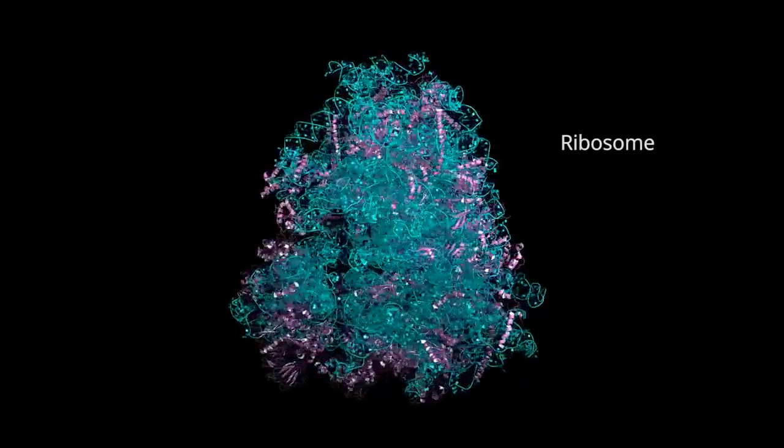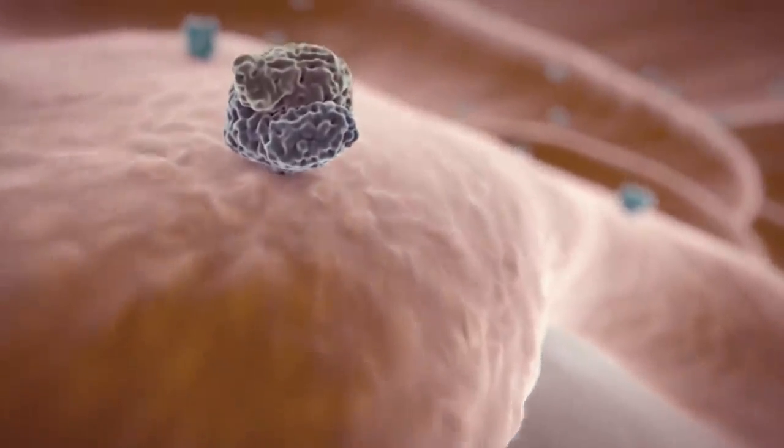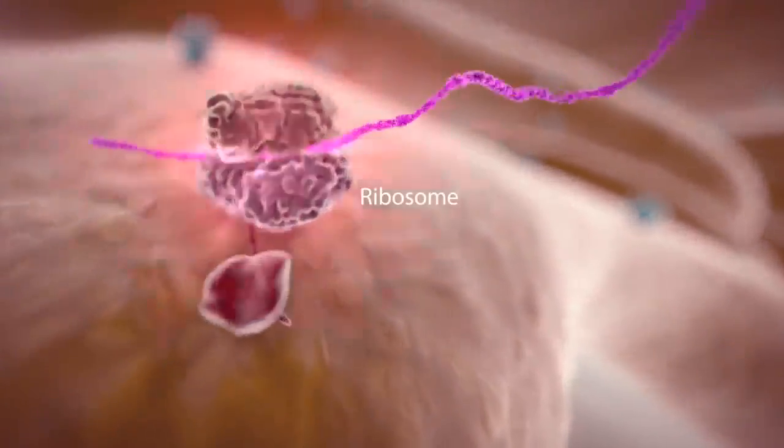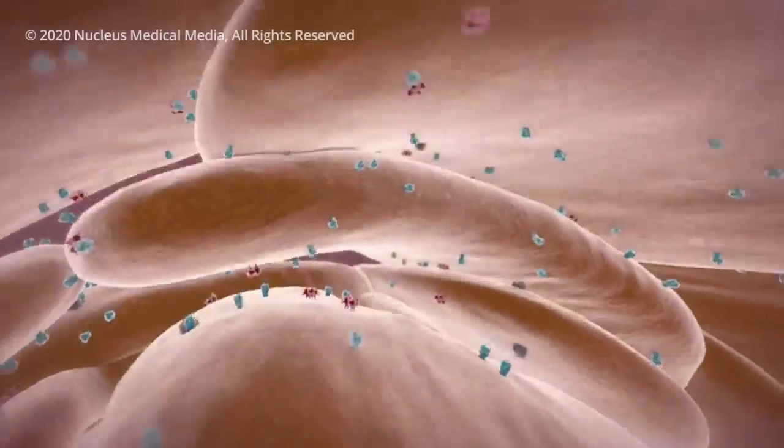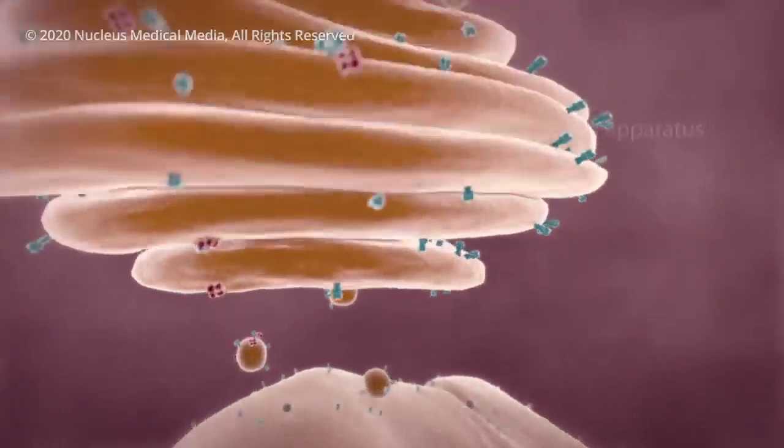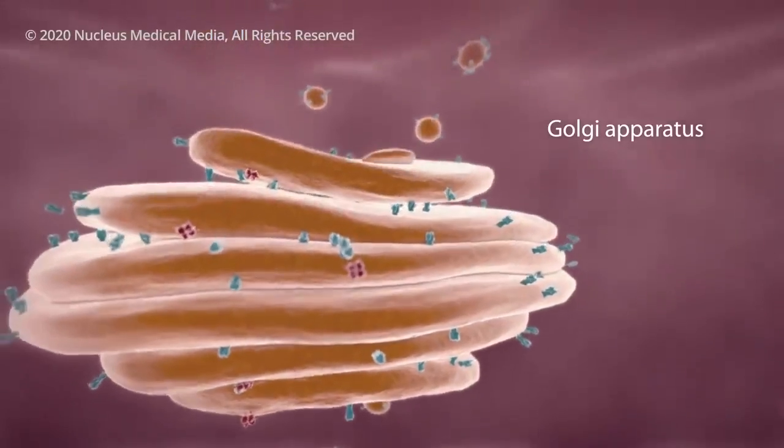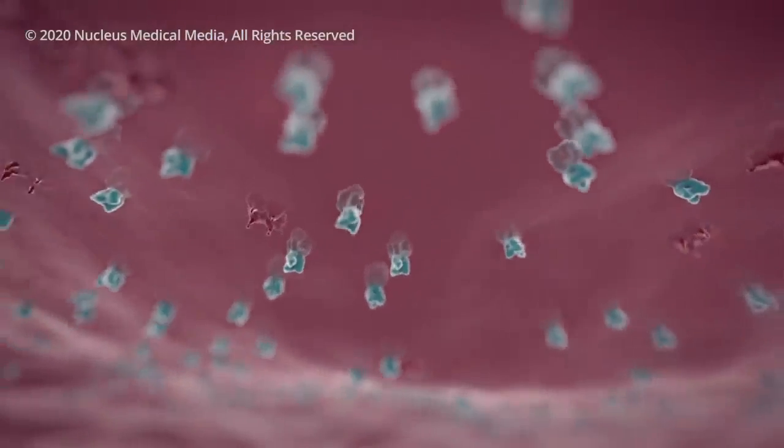Ribosomes use genetic information from the virus to make viral proteins, such as the spikes on the virus's surface. A packaging structure in your cell then carries the spikes in vesicles, which merge with your cell's outer layer, the cell membrane.